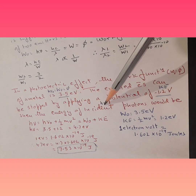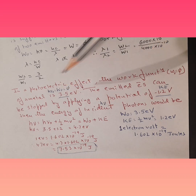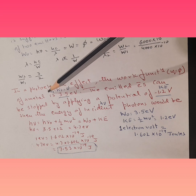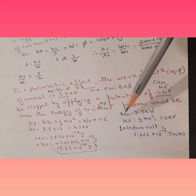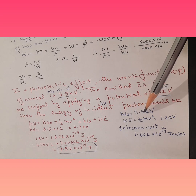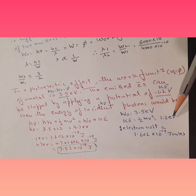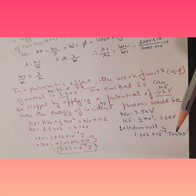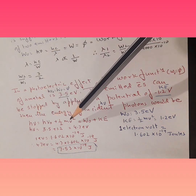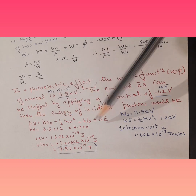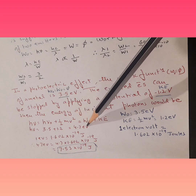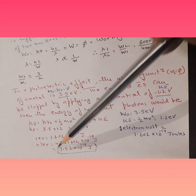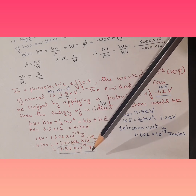The energy of the incident photon equals work function plus kinetic energy. Work function h-nu-zero is 3.5 eV as given, and kinetic energy is 1.2 eV. We also know that 1 electron volt equals 1.602 × 10⁻¹⁹ joules. Substituting those values: work function plus kinetic energy gives 4.7 eV. Converting to joules gives 7.53 × 10⁻¹⁹ joules.